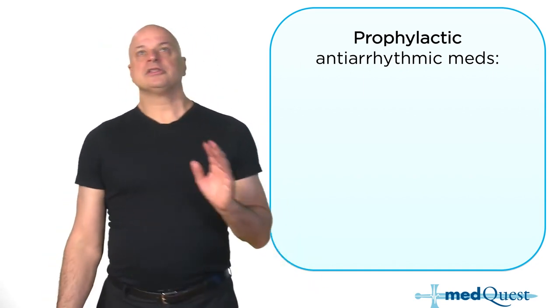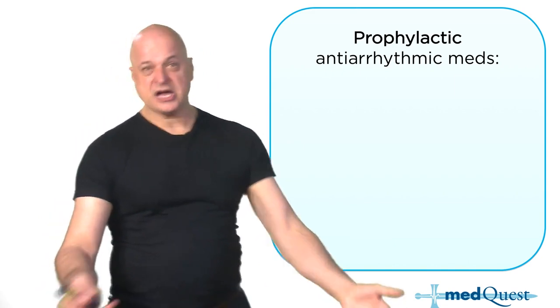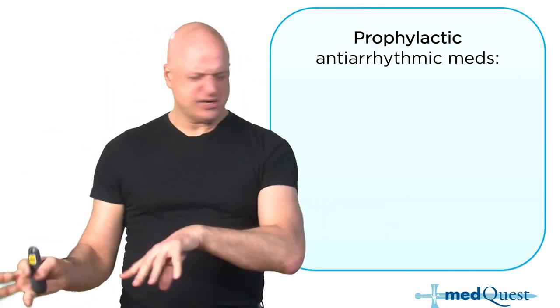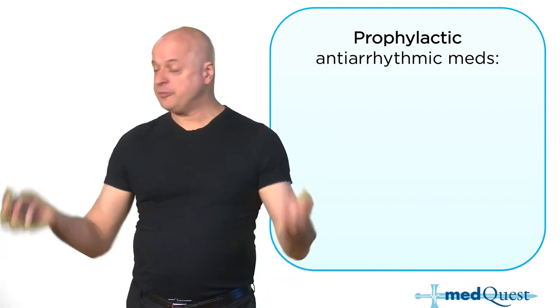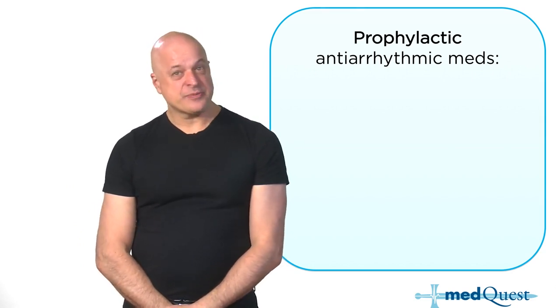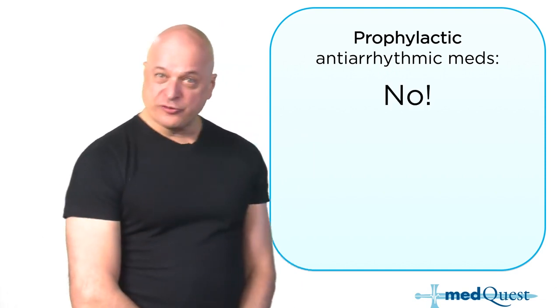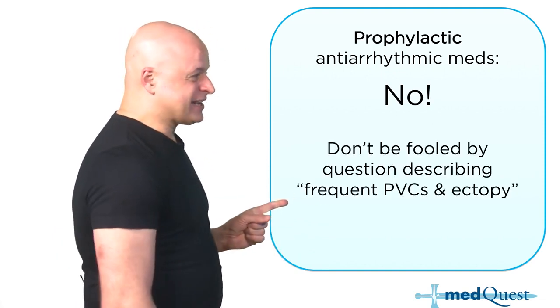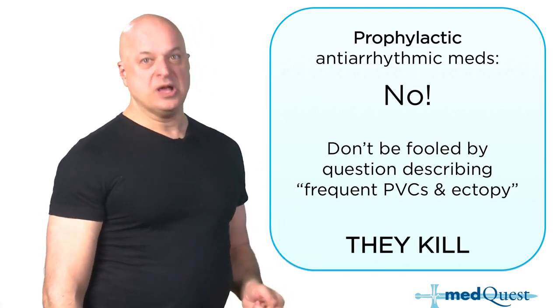The most common cause of death post-MI immediately is arrhythmia. The conduction system doesn't like ischemia — ischemia causes VTAC and VFib. You need to fix the ischemia, not put in an implantable defibrillator. Why not give prophylactic antiarrhythmics? Because antiarrhythmics in a small number of people are also proarrhythmic. In net, prophylactic antiarrhythmics killed more people than they saved — so it's a no.